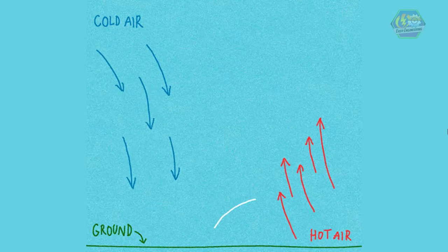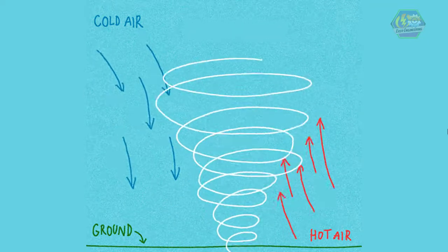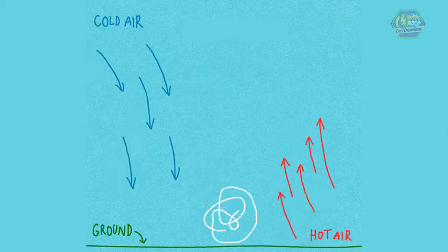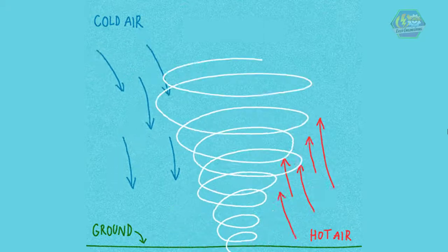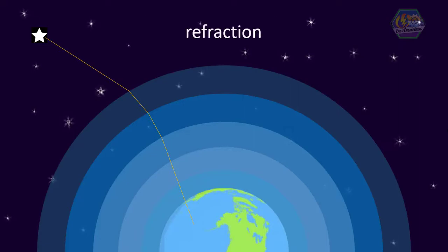These changes in the density of air make the air move fast, creating strong winds. As light from a star enters through our atmosphere, it bounces through the different layers of air. This bends the light before you see it. Yes, light can be bent, and it's called refraction.